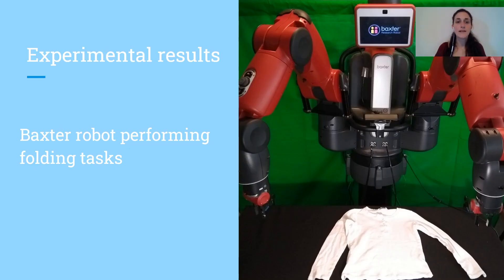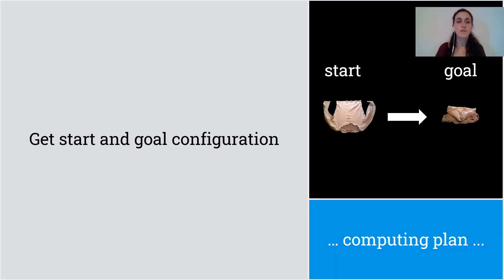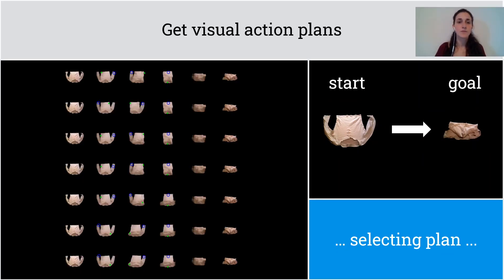We validated the approach on a real-world experimental setup that's composed of a Baxter robot performing a folding task. So first of all, we define the start and goal configurations. Then we get the visual action plans to achieve the goal configuration, and we select the one to perform.